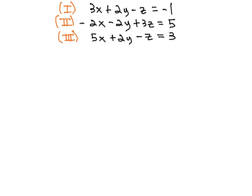As we look to eliminate the same variable twice, we look inside the problem to see if there is stuff that might eliminate quickly and easily. You might notice that the first two equations have negative 2y and positive 2y. Those y's would eliminate really quickly.